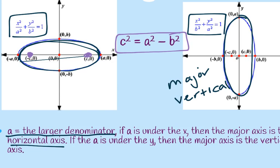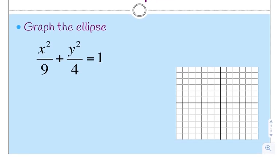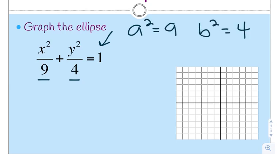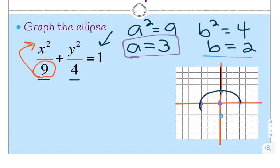Let's walk through some examples. To graph this ellipse, first make sure the equation equals 1, which it already does. The larger denominator is a-squared, so a-squared is 9 and b-squared is 4, meaning a is 3 and b is 2. Because a is under the x, this is wider than it is tall. From the center at (0, 0), I count right 3 and left 3, and up 2 and down 2, then connect my ellipse.